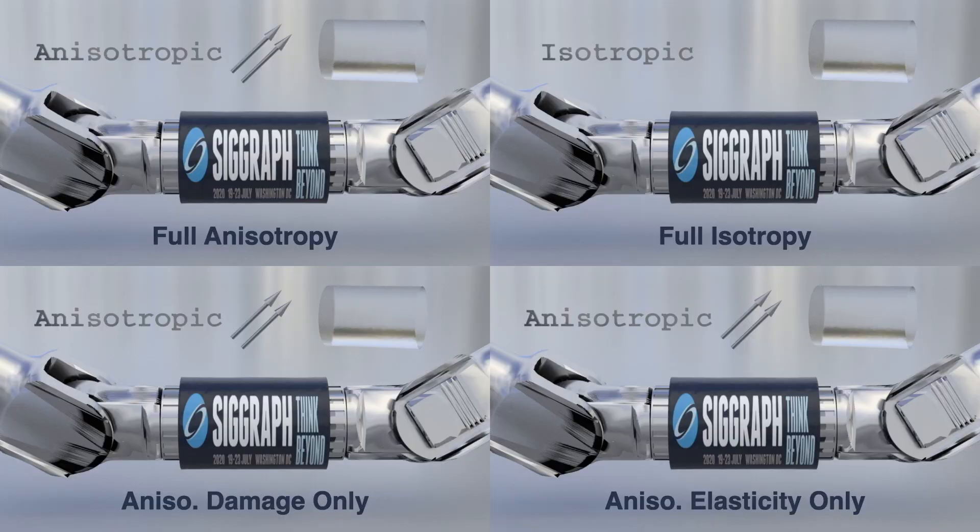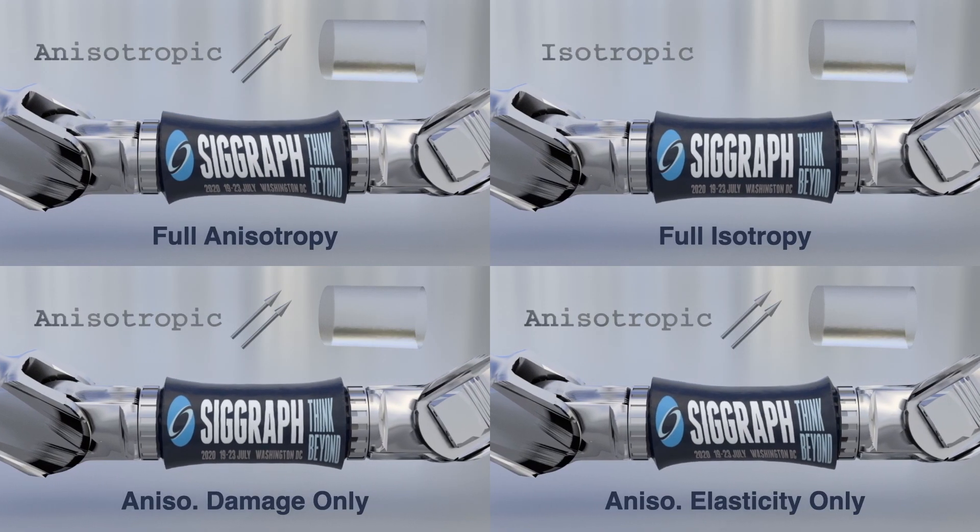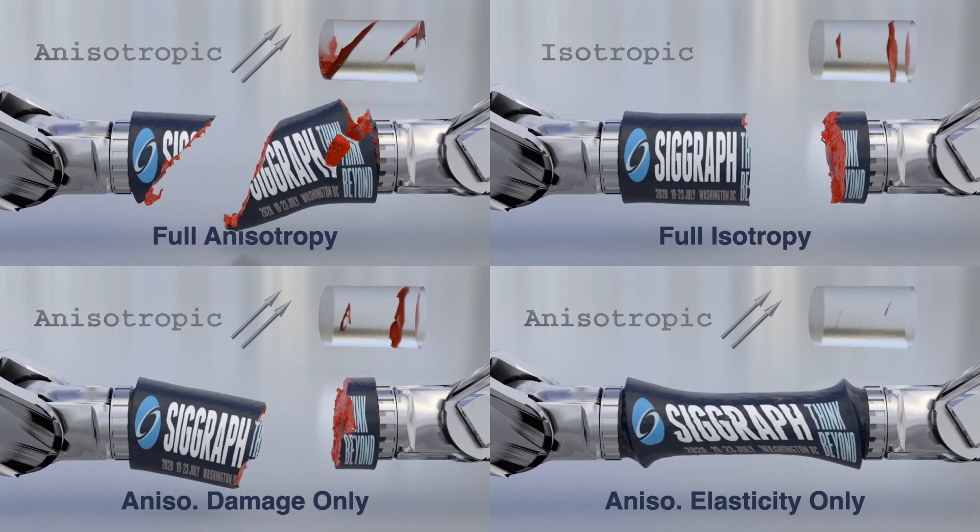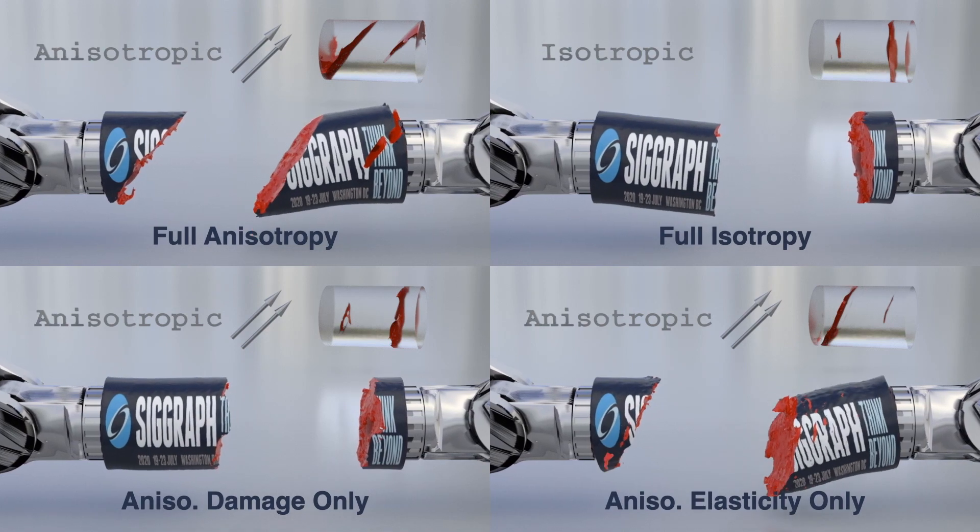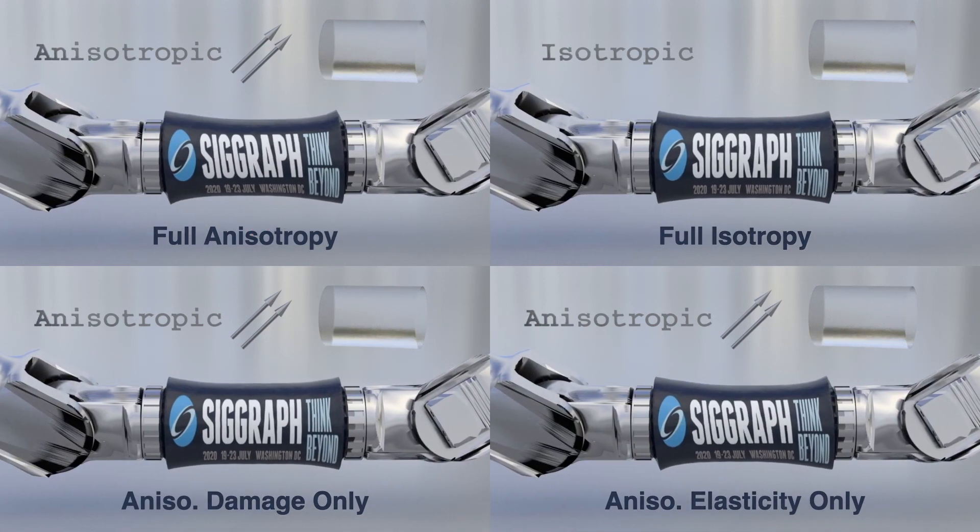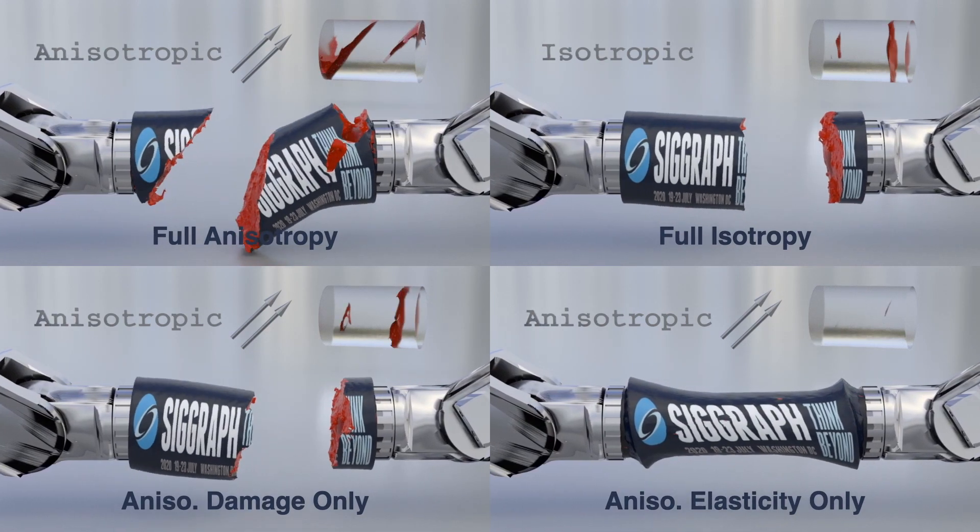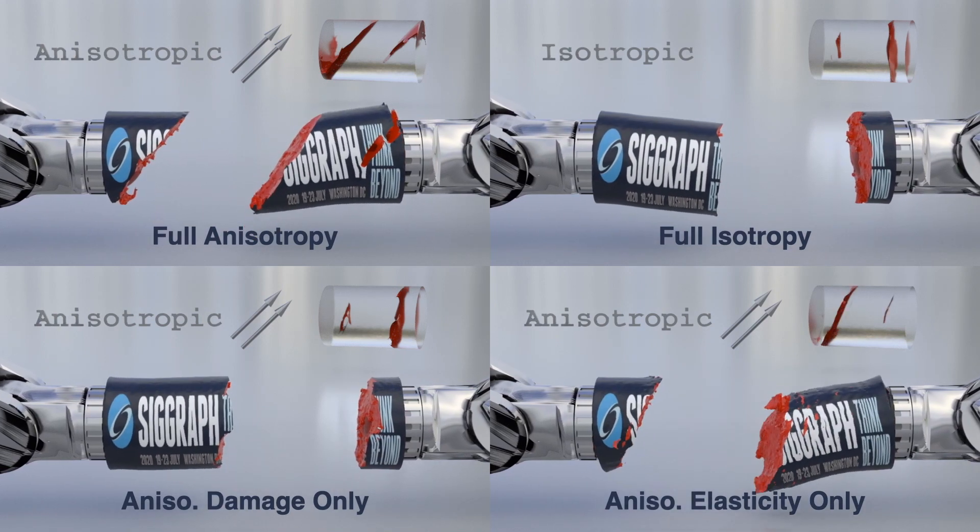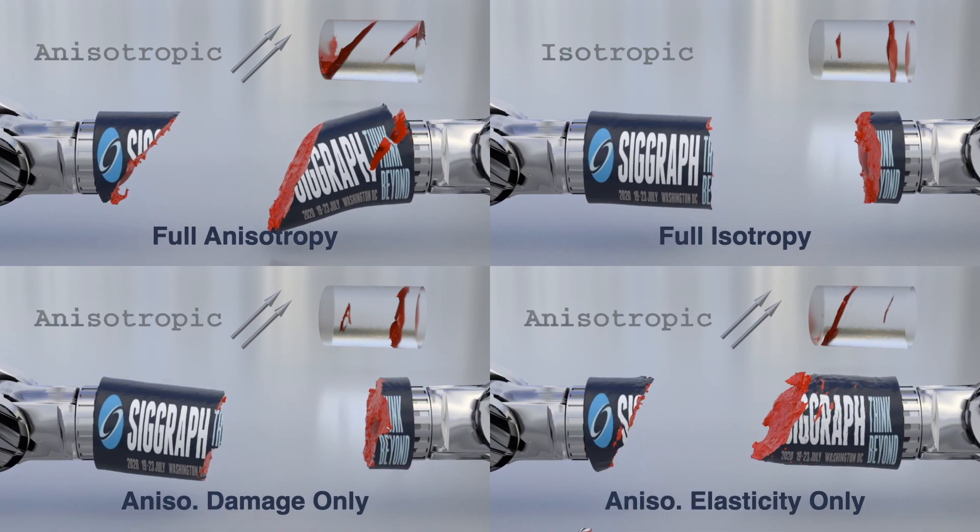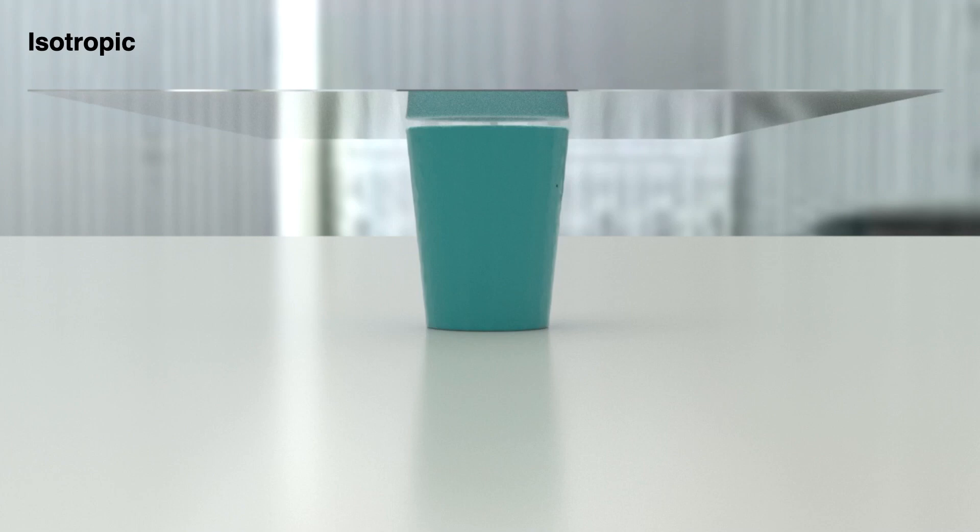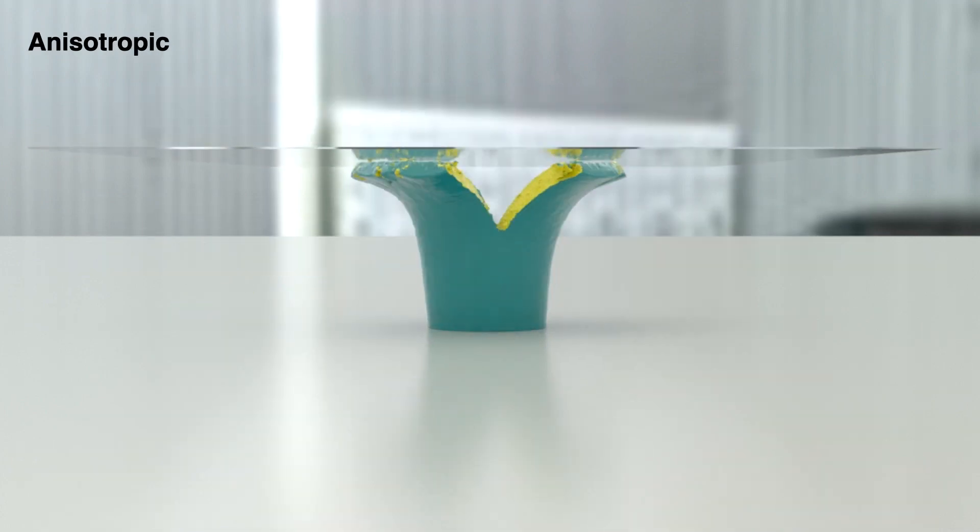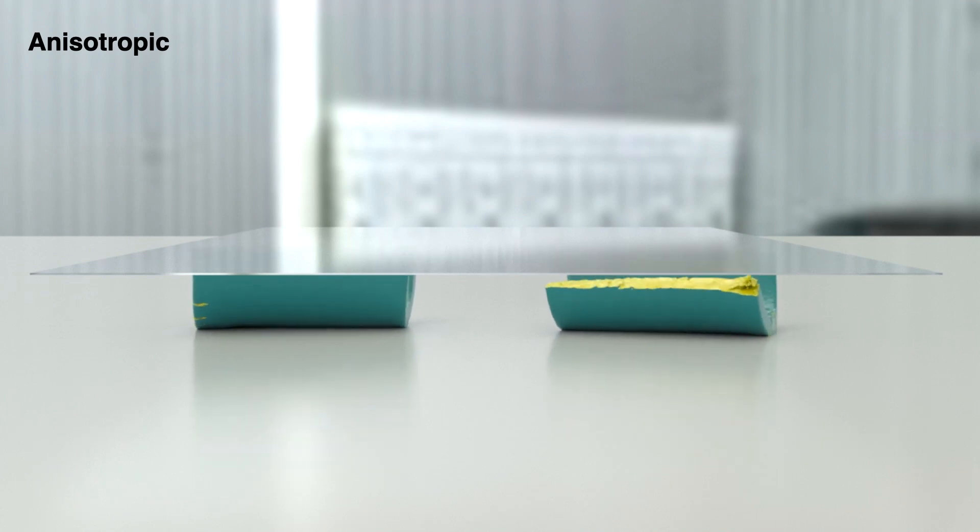Here we pull on four tubes with 45 degree fibers, each with a different combination of damage and elasticity. We see here the strength of coupling anisotropic damage with anisotropic elasticity, as using only one or the other method can lead to weakly guided fracture, like on the bottom left, or uncontrollable numerical fracture, like on the bottom right. Here we smash a hollow isotropic tube and color the crack surfaces yellow. Next, we make this tube anisotropic by adding vertical fibers for transverse isotropy. Notice the clear splitting we get along the fibers now.